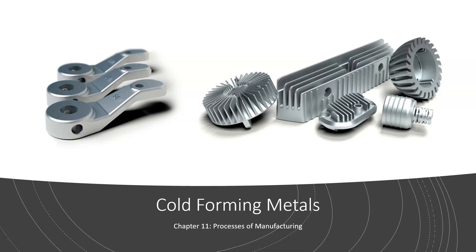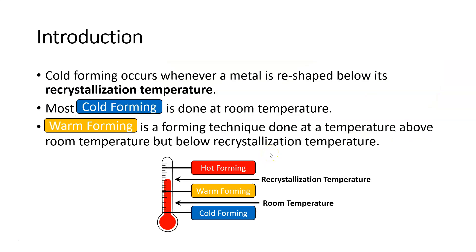Let's continue our discussion with section three: forming manufacturing processes. We will look at cold forming, and specifically cold forming operations for metals. In the last chapter, chapter 10, we looked at hot forming. And now we're going to look at the other side of the coin — these are forming operations that are done at more or less room temperature.